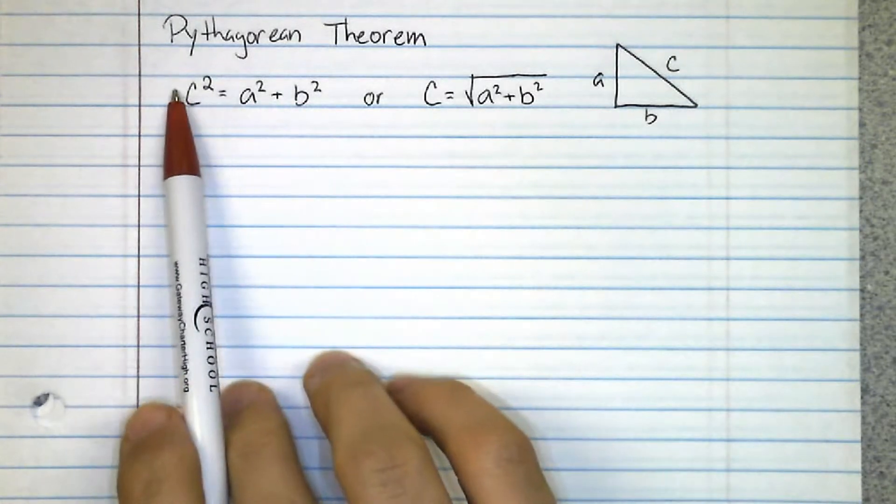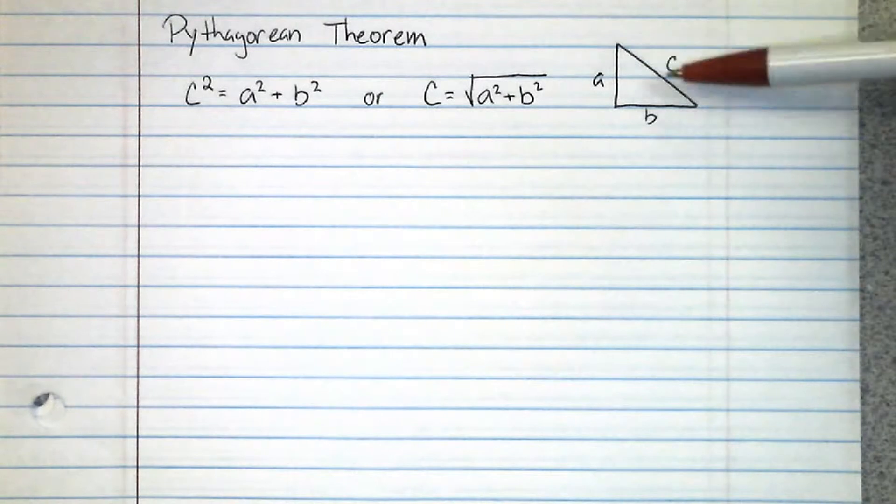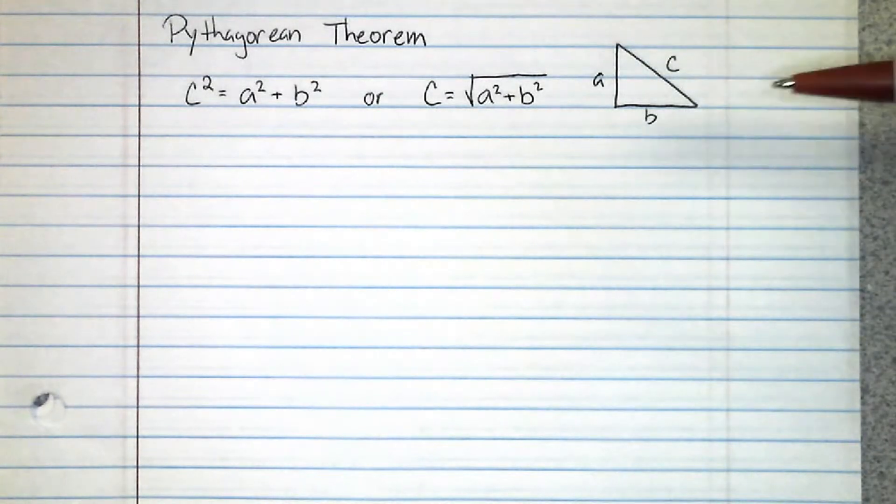These are both the same thing. It's just here we took the square root of both sides and the square and radical sign cancel. Remember c stands for the hypotenuse which is the longest side on a triangle. I'll show you what this looks like in a problem.